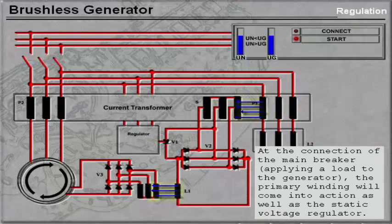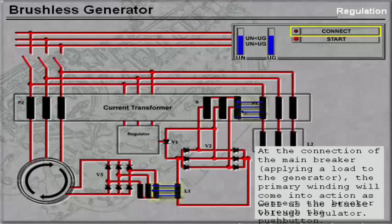At the connection of the main breaker, applying a load to the generator, the primary winding will come into action, as well as the static voltage regulator. Connect the breaker through the push button.